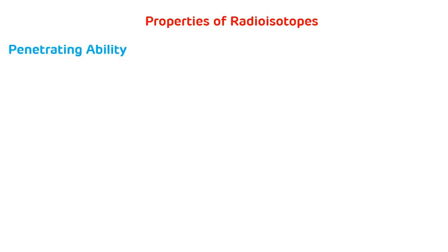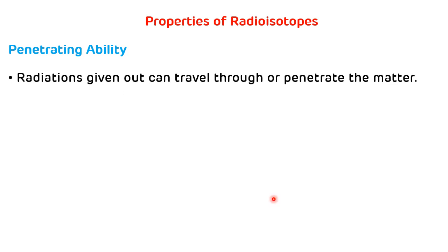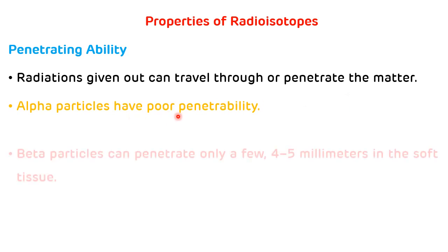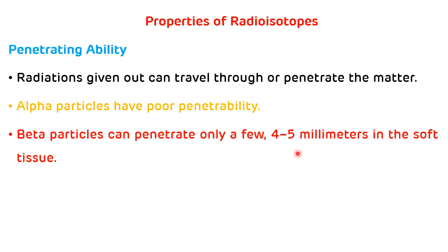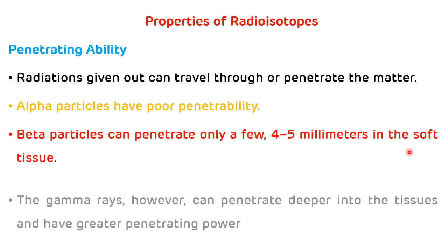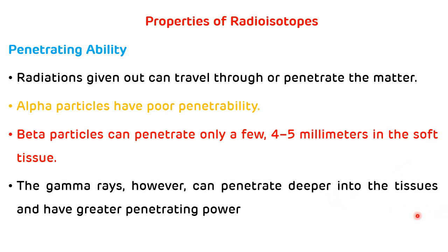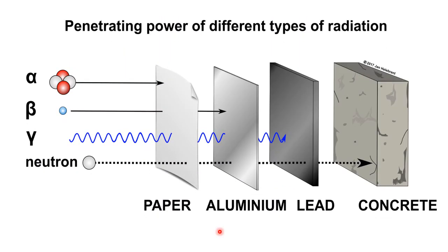The first property of radioisotopes is penetrating ability. Radiation given out can travel through or penetrate matter. Alpha particles have very poor penetrability. Beta particles can penetrate only a few millimeters — about 4 to 5 mm — in soft tissue. Gamma rays, however, can penetrate deeper into tissues and have greater penetrating power. Neutrons have the greatest penetrating ability.